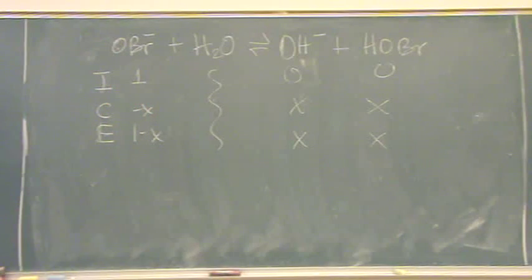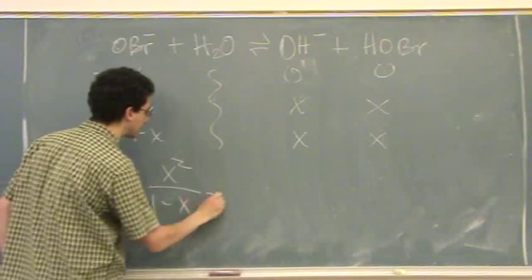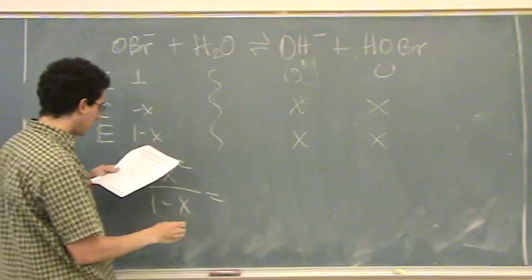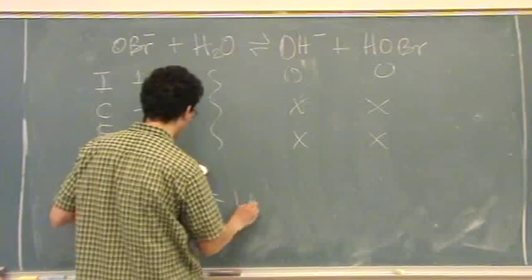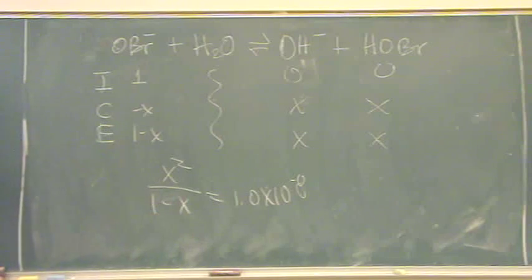And so then we solve this just as normal. X squared over 1 minus X equals KB, which is 1.05 times 10 to the minus 8. So you're going to assume X is small. Solve for X. You should get a pH of 10.